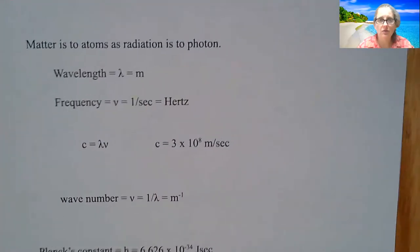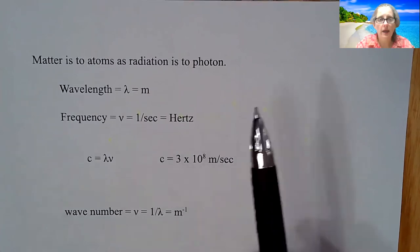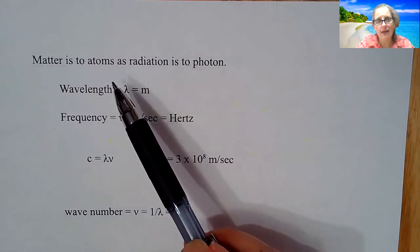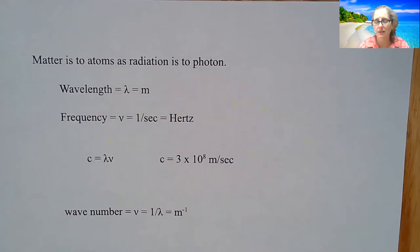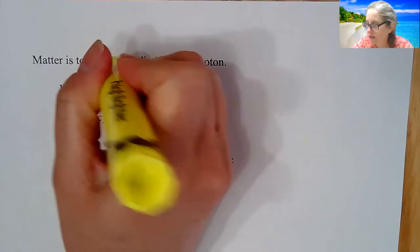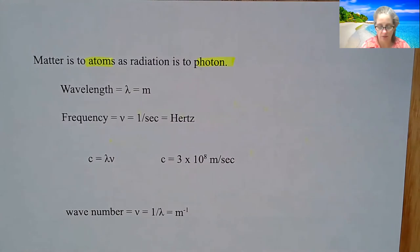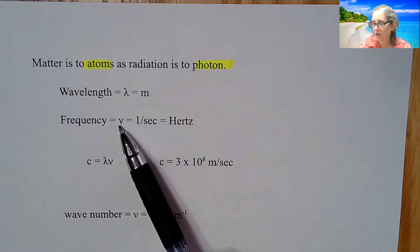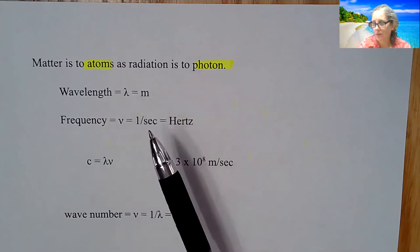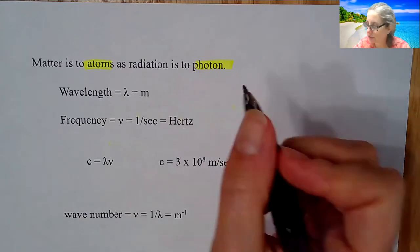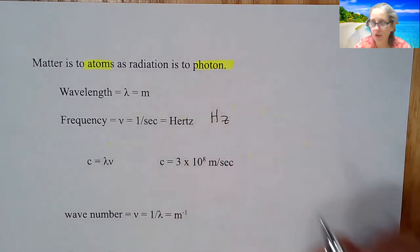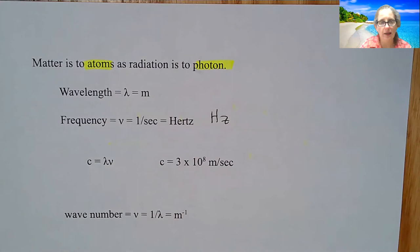We have an expression: Matter is to atoms as radiation is to photons. Essentially matter, the smallest thing is the atom. Radiation, the smallest thing is the photon. When we are talking about wavelength that's our lambda, that's our nu. Wavelength is going to be meters. Frequency is going to be inverse seconds or hertz. Abbreviation for hertz is capital HZ.